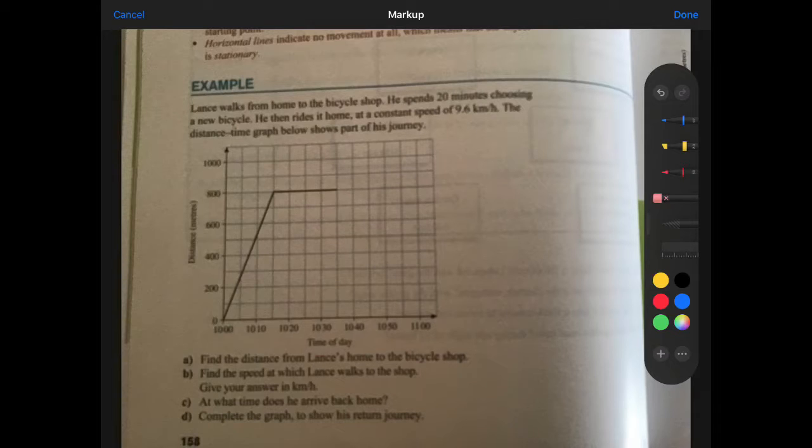Find the distance from Lance's home to the bicycle shop. So if he cycles from home, home is zero because that's where we start from. And he's traveling until he stops. He stops here at 10:15. So this is the time that he takes to ride to the shop. And that's the distance covered to get to the shop. So the distance to the shop must be 800 meters. I just read it from the vertical axis.